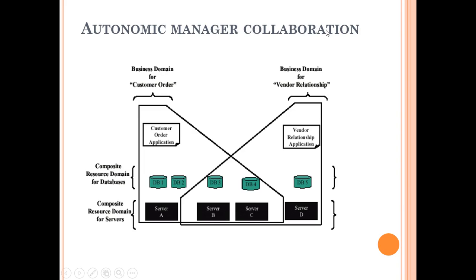Autonomic manager collaboration is something like this. We have the business domain for customer order and the business domain for vendor relationship. These are the composite resource domains for databases, and these are the composite resource domains for servers. We have servers, databases, the customer order application, and the vendor relationship application.